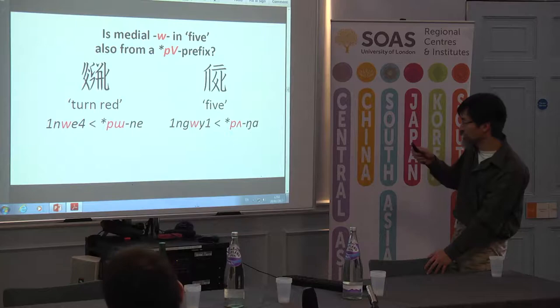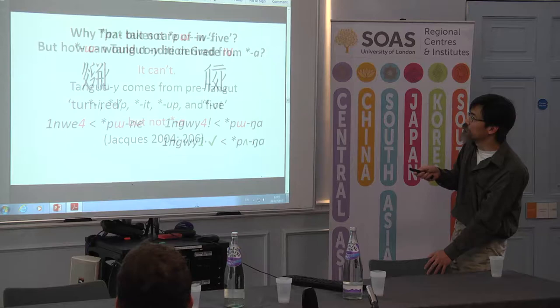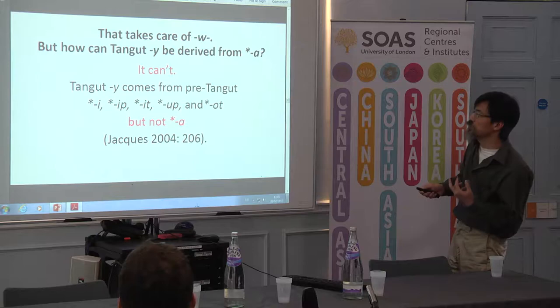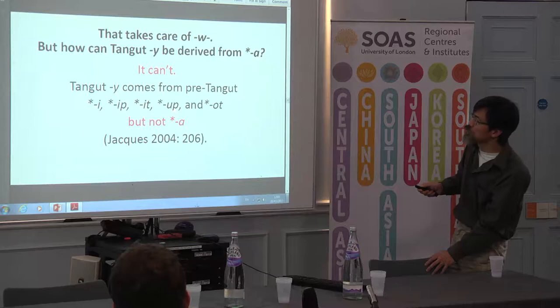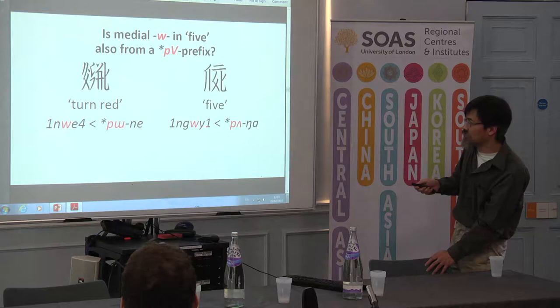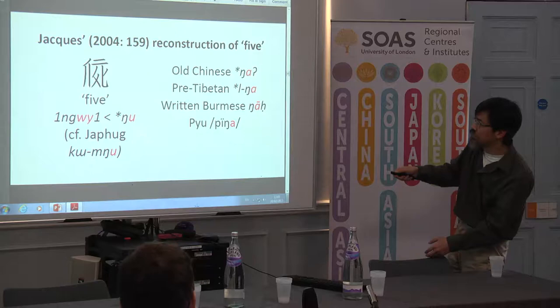We're still stuck on why five has U for the vowel — it shouldn't. U cannot be derived from A. Guillaume Jacques' book on Tangut demonstrates that U can have many different sources: i, ip, it, up, and ot — but not A. So we still have a problem. How can my claim that five is related to all those other words with A work if five has U?